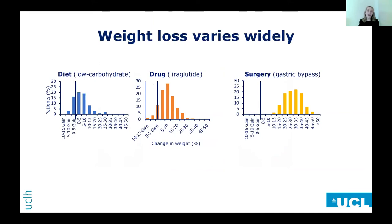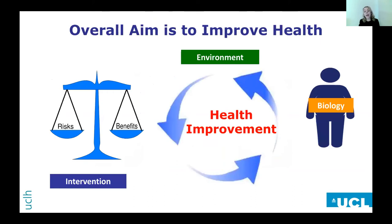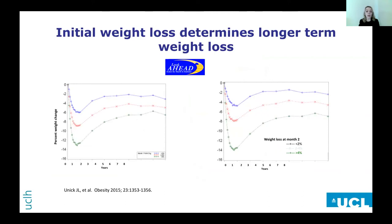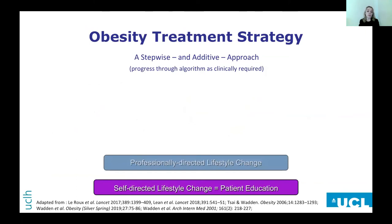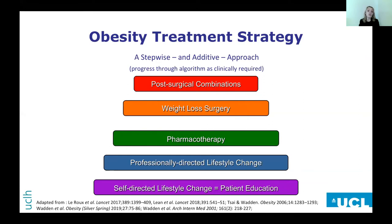There's a wide variation in weight loss with any intervention — be it diet, drugs, or surgery. Any intervention has risks and benefits, and the health improvement is dependent upon the biology of the person and the environment in which they live. We also know that initial weight loss with any intervention determines long-term weight loss, meaning we can identify people who are not responding early and switch treatments. So we have a stepwise treatment strategy: starting with professionally directed lifestyle changes, then pharmacotherapy, then weight loss surgery, and then post-surgery combination — adding in pharmacotherapy as needed.